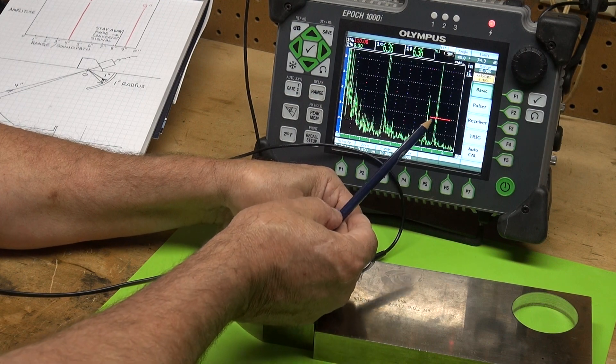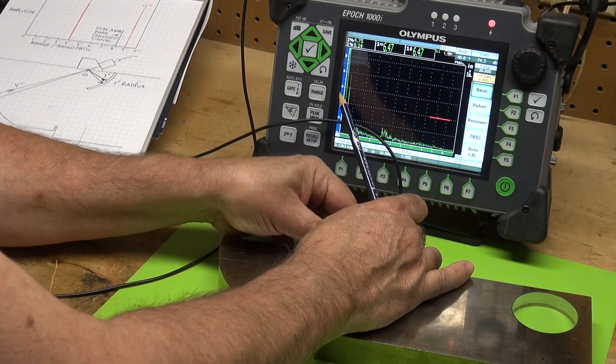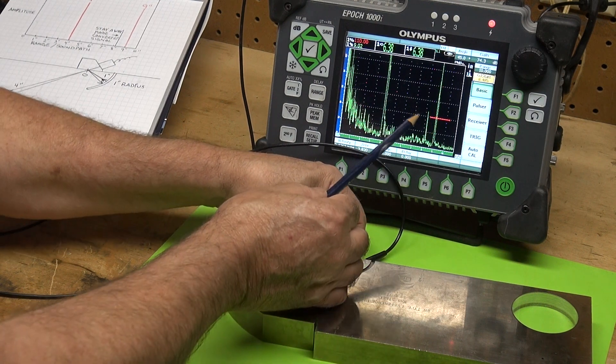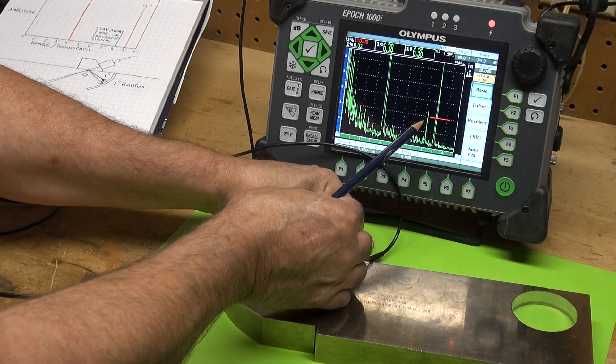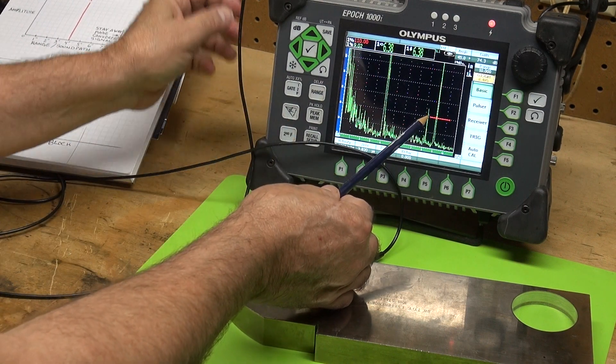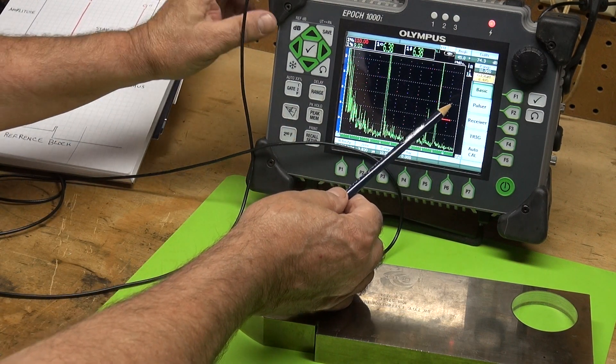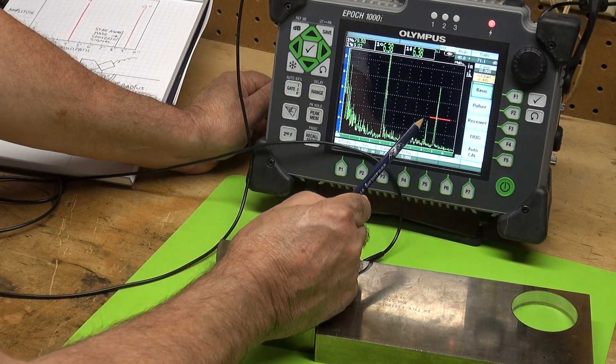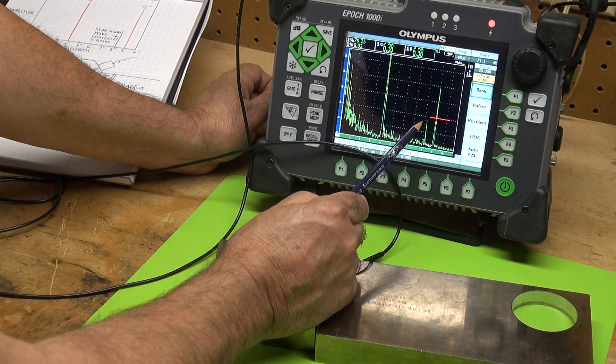Keep in mind if that signal is present, avoid it. Look, this is a good example. I have my gain cranked up a bit, but you see the mode converted signal? That's my good signal right there, that's my 9 inch reflector. You can see this guy's kind of enticing. Stay away from him.